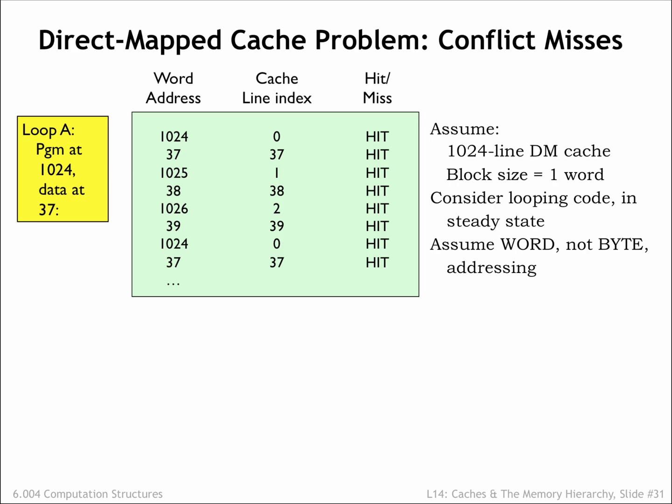Direct map caches do have an Achilles heel. Consider running a three-instruction loop with the instructions located starting at address W1024 and the data starting at W37, where the program is making alternating accesses to instruction and data — for example, a loop of load instructions. Assuming a 1024-line direct map cache with a block size of 1, the steady-state hit ratio will be 100% once all 6 locations have been loaded into the cache, since each location is mapped to a different cache line.